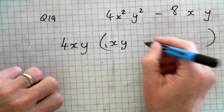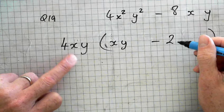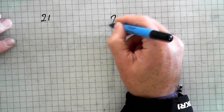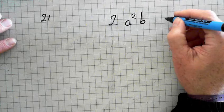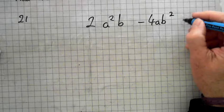Alright. So, how do I get. What am I missing here? 4xy times what gives me. I'm missing an x, aren't I? Yeah. x times x is x squared. y times y is y squared. 4 times 1 is 4. Alright. Bring down the sign. Minus. 4 times 2 is 8. Do I need any more x's or y's? No. Fine. It's question 19.